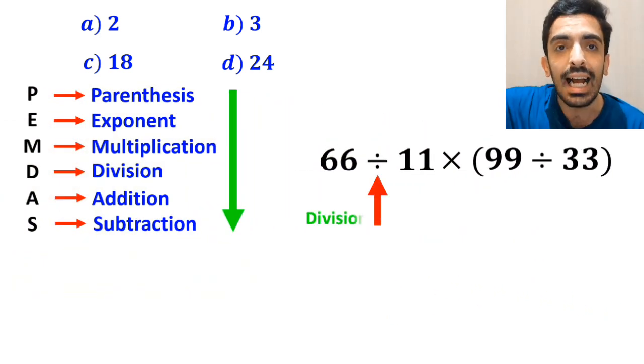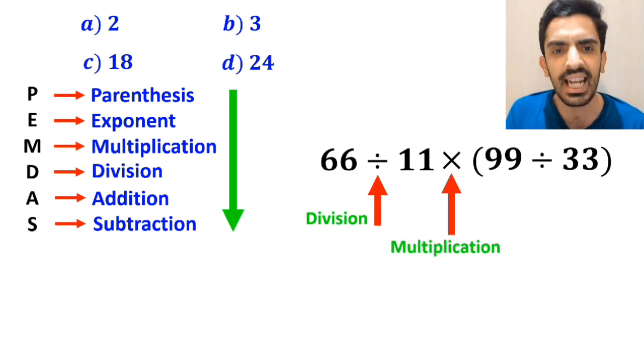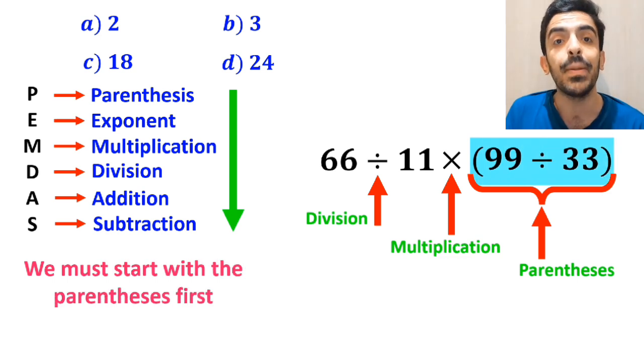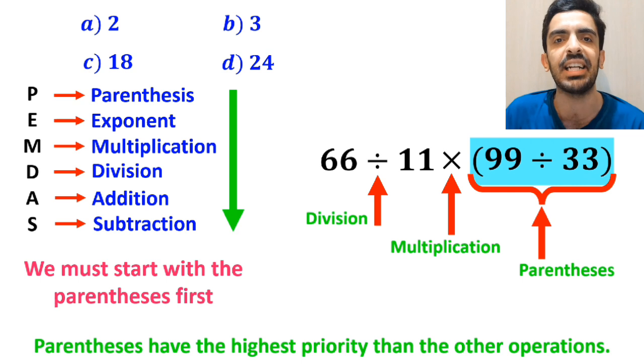As you can see in the image, in this expression, first we have a division sign, then a multiplication sign, and finally parenthesis. According to the PEMDAS rule, we must start with the parenthesis, because parenthesis have the highest priority compared to the other operations.